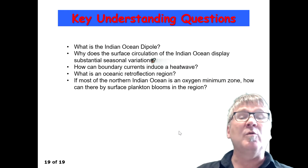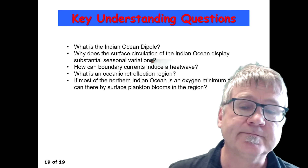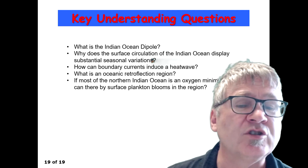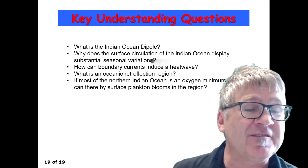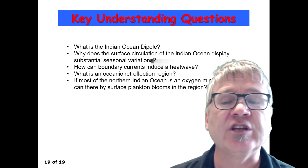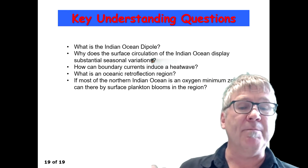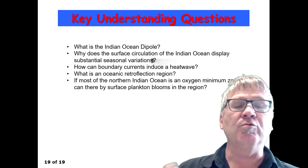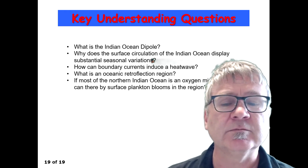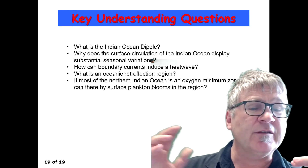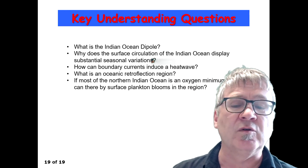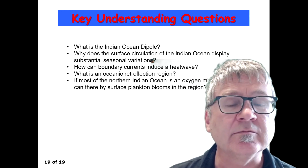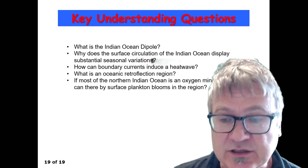Key understanding questions: What is the Indian Ocean Dipole? Why does the surface circulation of the Indian Ocean vary seasonally — specifically the northern Indian Ocean? How can boundary currents induce a heat wave? What is an oceanic retroflexion region? And if most of the northern Indian Ocean is an oxygen minimum zone, how can there be surface plankton blooms in the region — don't you need oxygen for it?